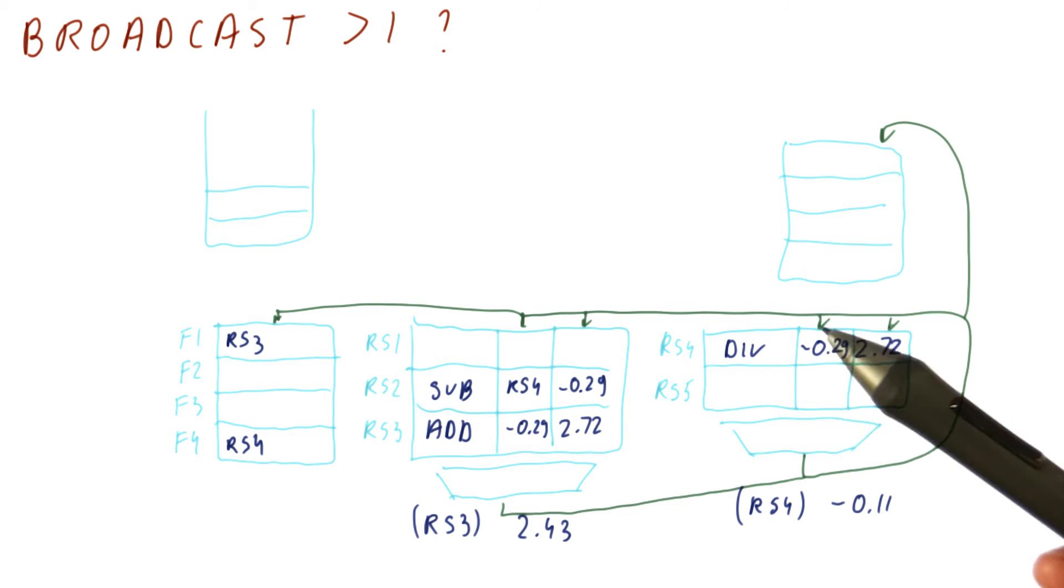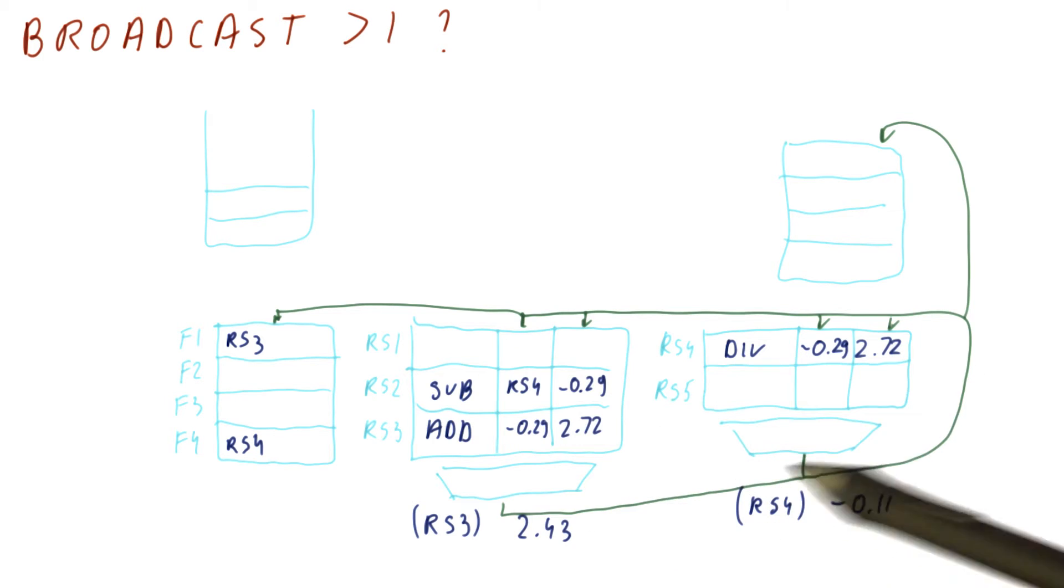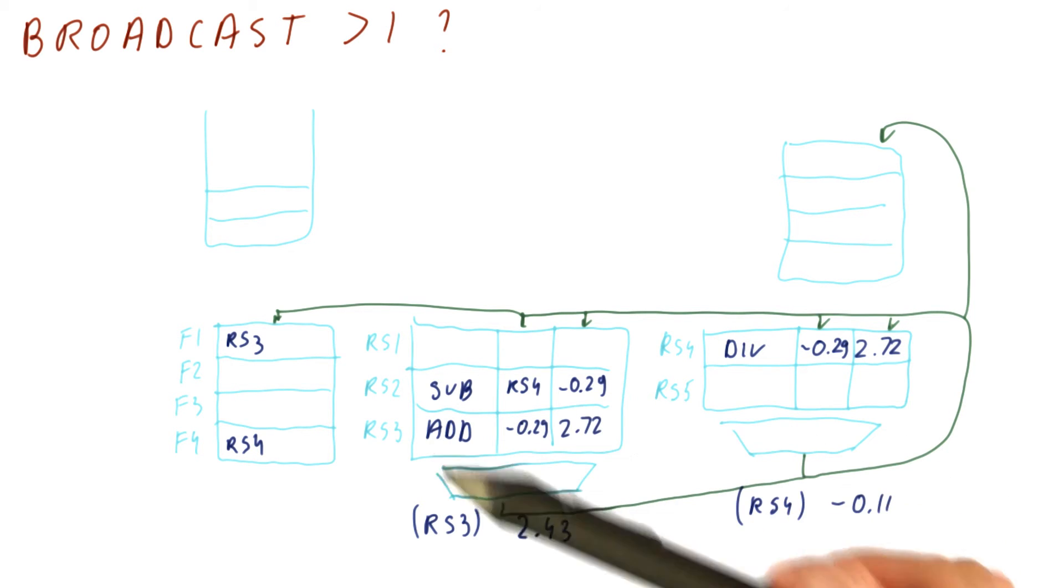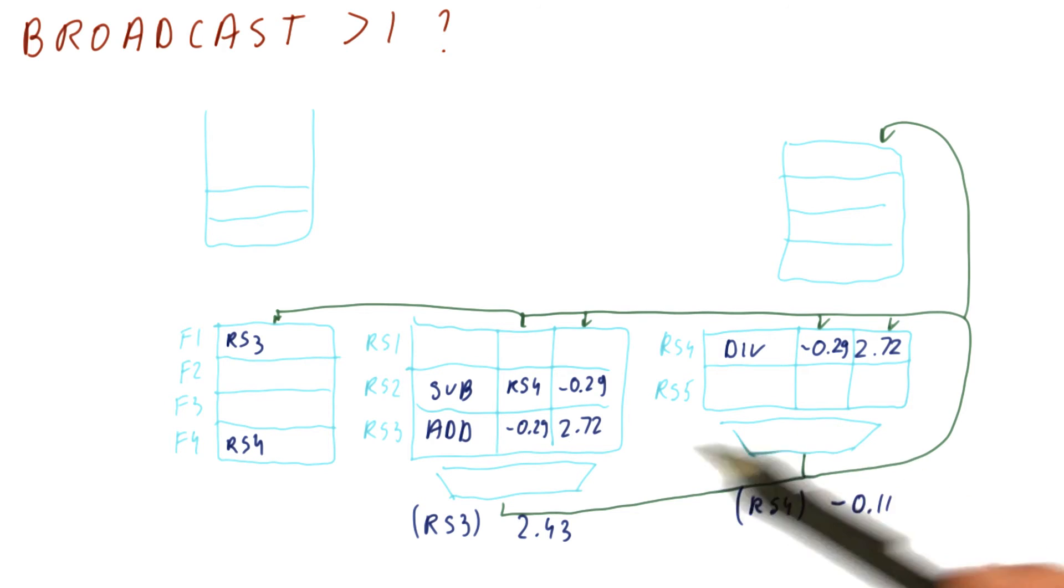And usually you either just make one unit be the highest priority unit and the other ones are less priority than that so that you always know. We need to choose very quickly which one is going to be broadcast. It doesn't matter so much which one it is as much as it matters that it's only one. So basically one of them needs to be picked.